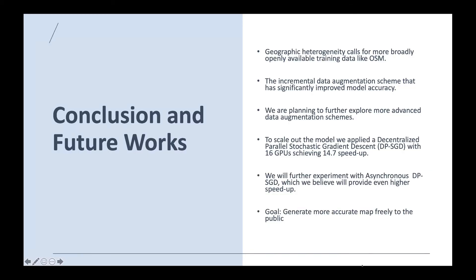To conclude, the incremental data augmentation together with feature-weighted CycleGAN proved to be effective in addressing the inaccuracy and incompleteness of OpenStreetMap.